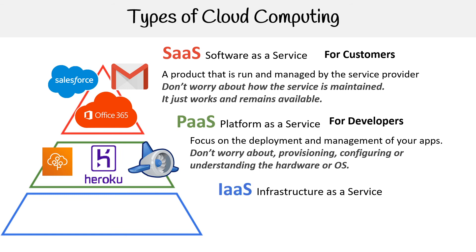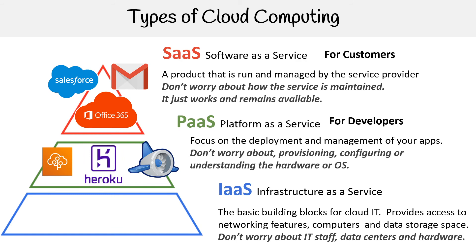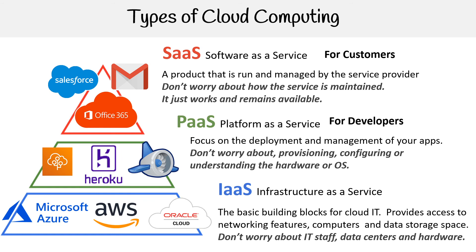At the bottom we have Infrastructure as a Service. This is the basic building blocks for cloud IT — it provides access to network features, computers, and data storage space. You do not worry about the IT staff, the data centers, or hardware. This is really what we are most interested in. Examples include Microsoft Azure, AWS, and Oracle Cloud. This is really intended for admins, giving you the ability to do anything and everything that you want.